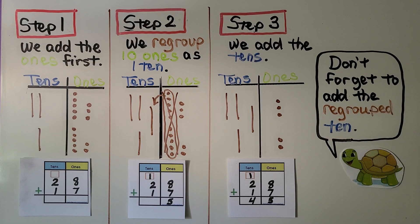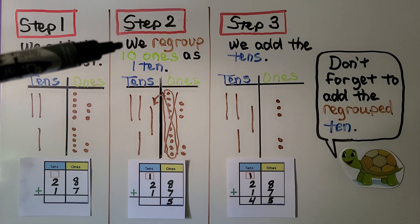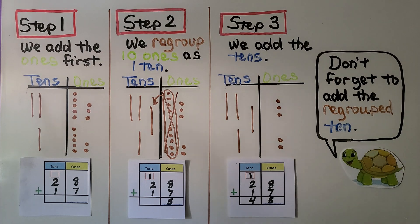There are three steps to what we just did. We add the ones first. We regroup ten ones as one ten. Then we add the tens.